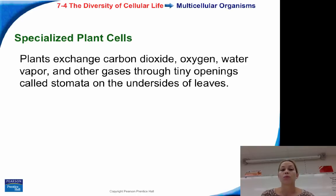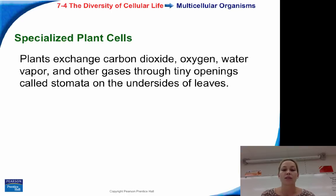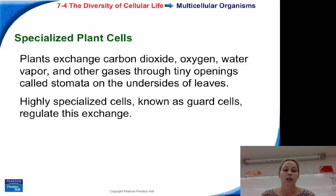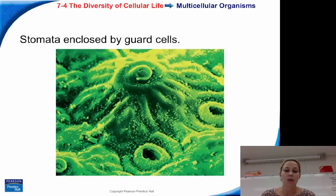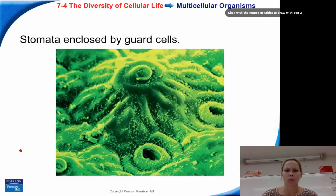Plant cells also have specialized cells. Plants exchange carbon dioxide, oxygen, and water vapor, as well as other gases, through tiny openings called stomata on the underside of their leaves. Think of them as pores on the underside of their leaves, responsible for the exchange of these gases. Here is a diagram of the back of a plant leaf.